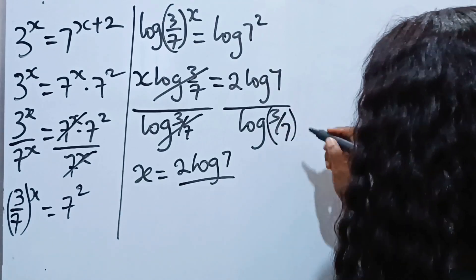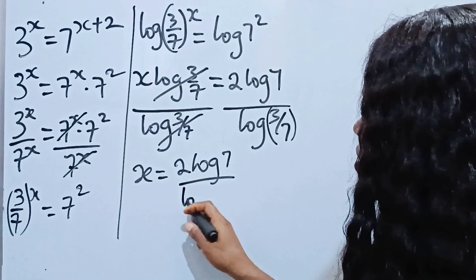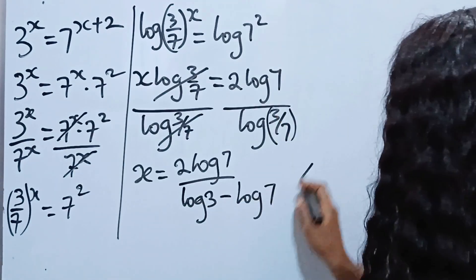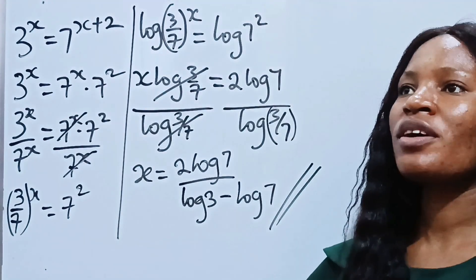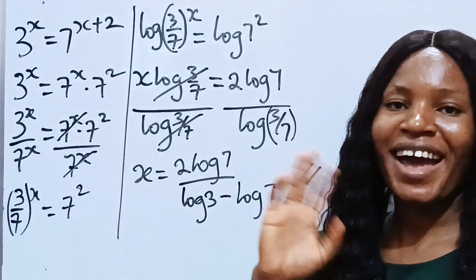Now this is division. When you have a number being divided by the other, you can express it as log 3 minus log 7. So you notice that we still got the same value. Thank you so much for watching and don't forget to give us a thumbs up if you've not done that and have a lovely day. Bye.